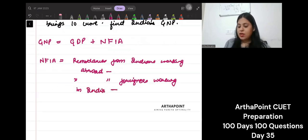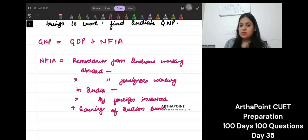Minus remittances by foreign investors plus earning of Indian business from abroad. So when you do this, you get net factor income from abroad.